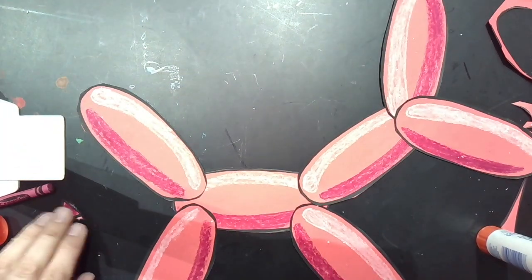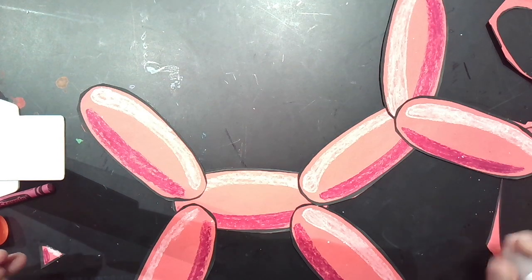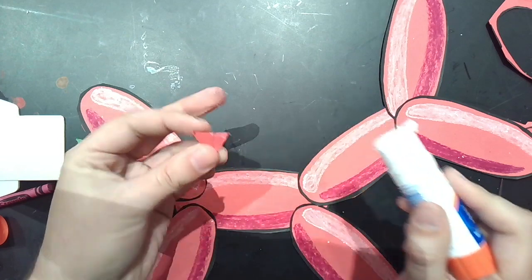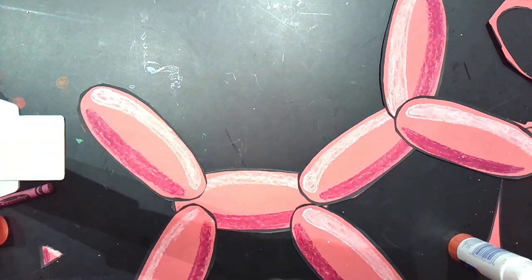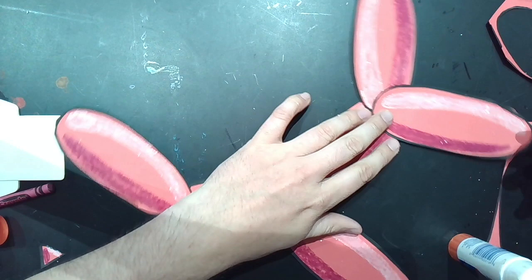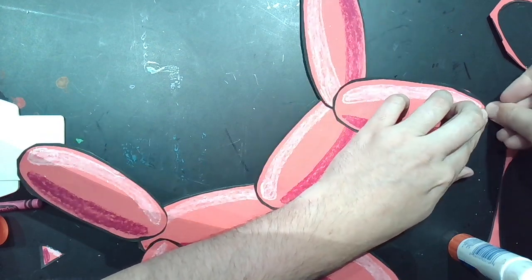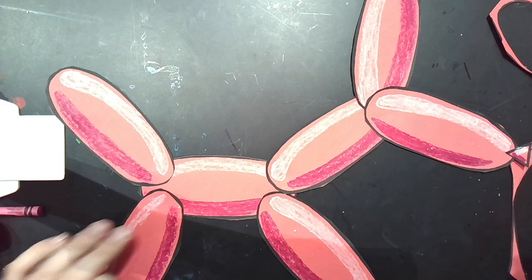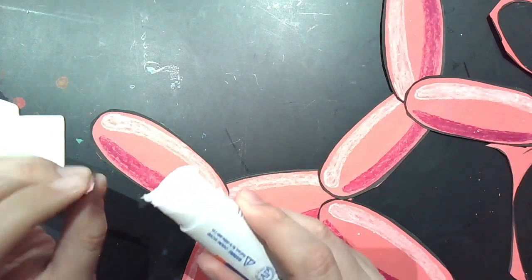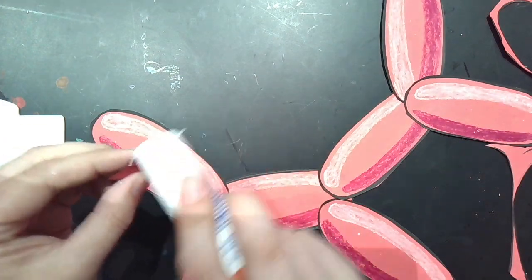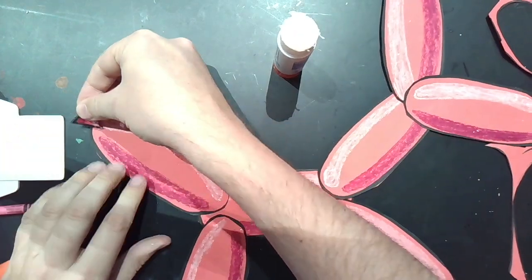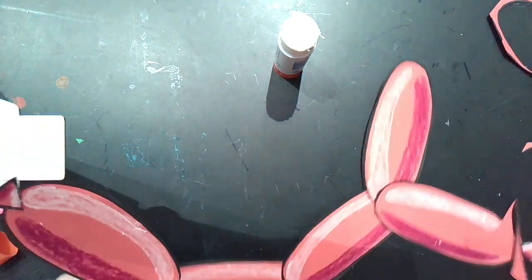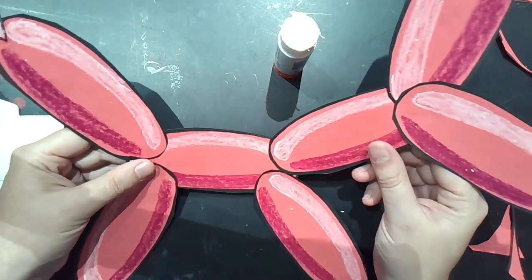And the last thing we need to do is to glue on our little triangle shapes. So on the one corner, the back of my triangle is going to get some glue. And stick that on there. And same thing on this side. And I'm going to stick that on there so it looks like the ends, the two ends of the balloon. And there you have it, your balloon animal.